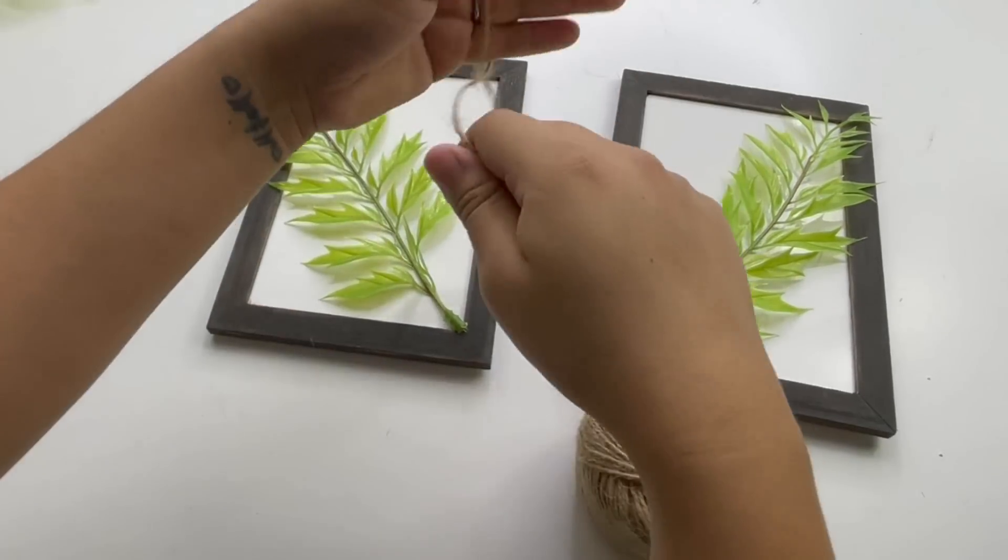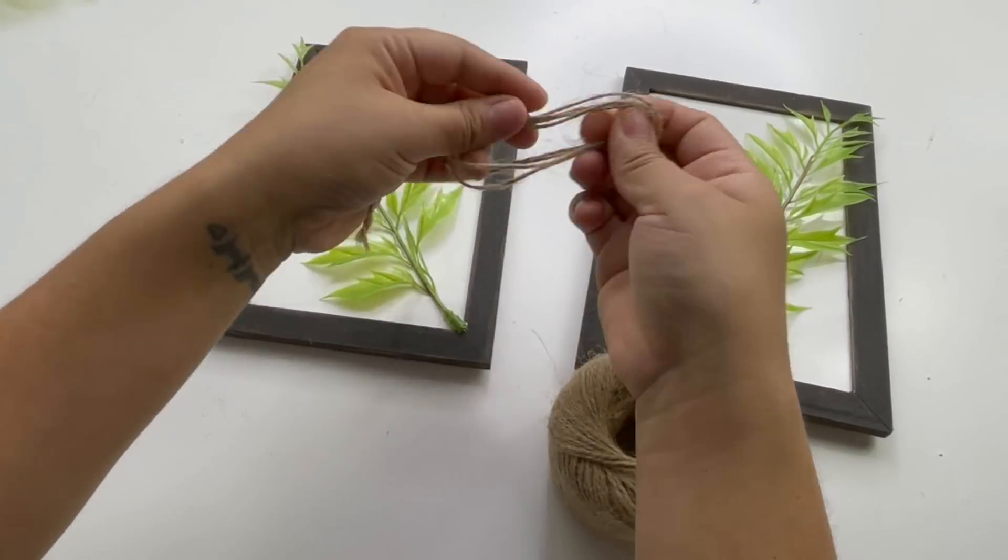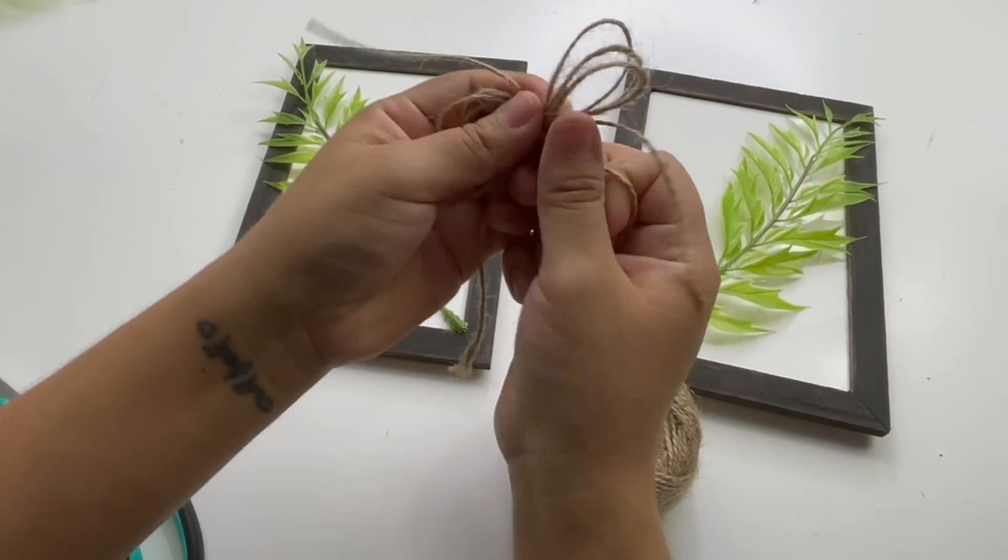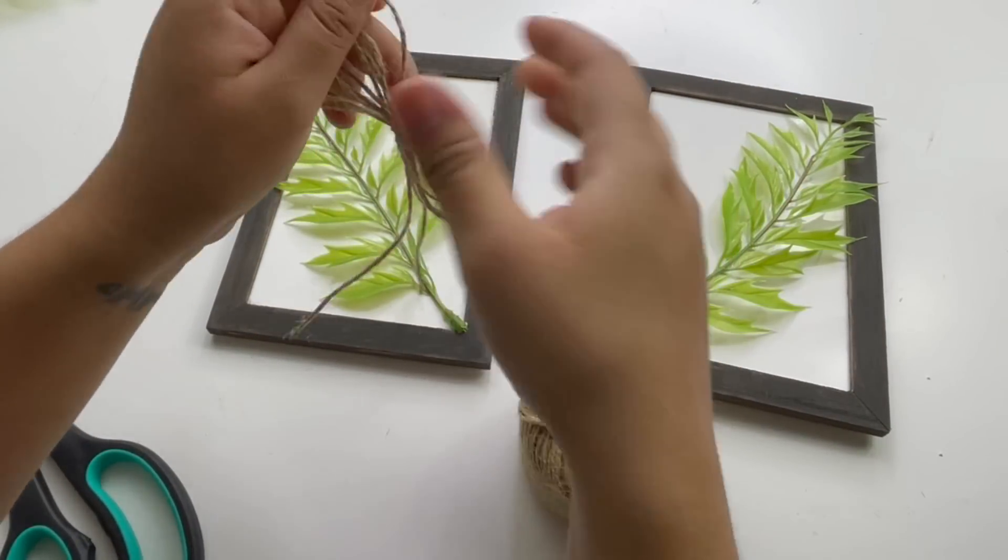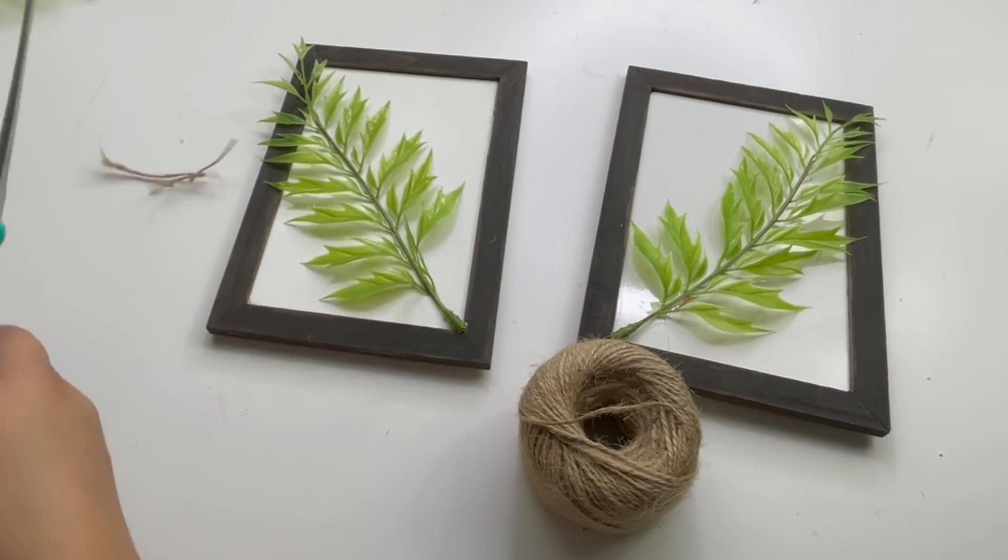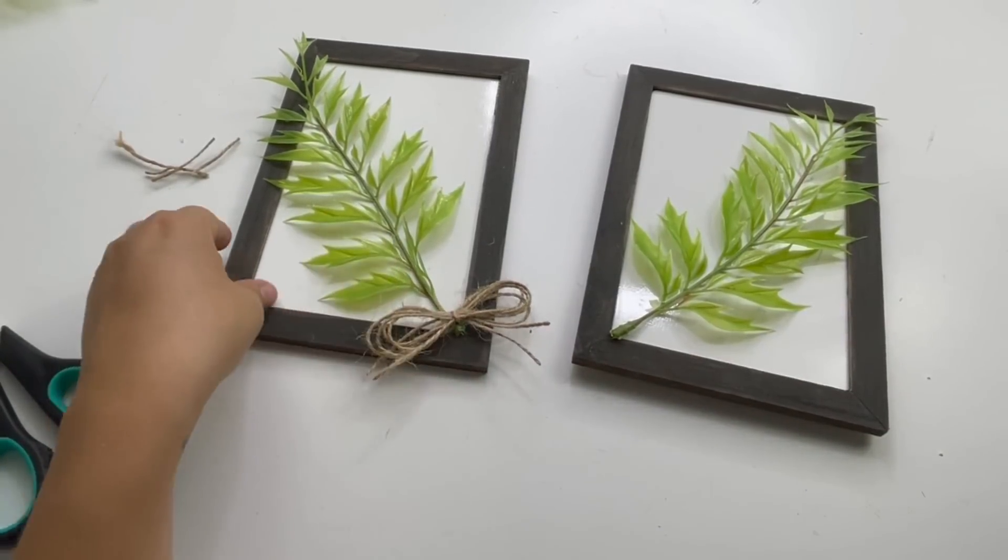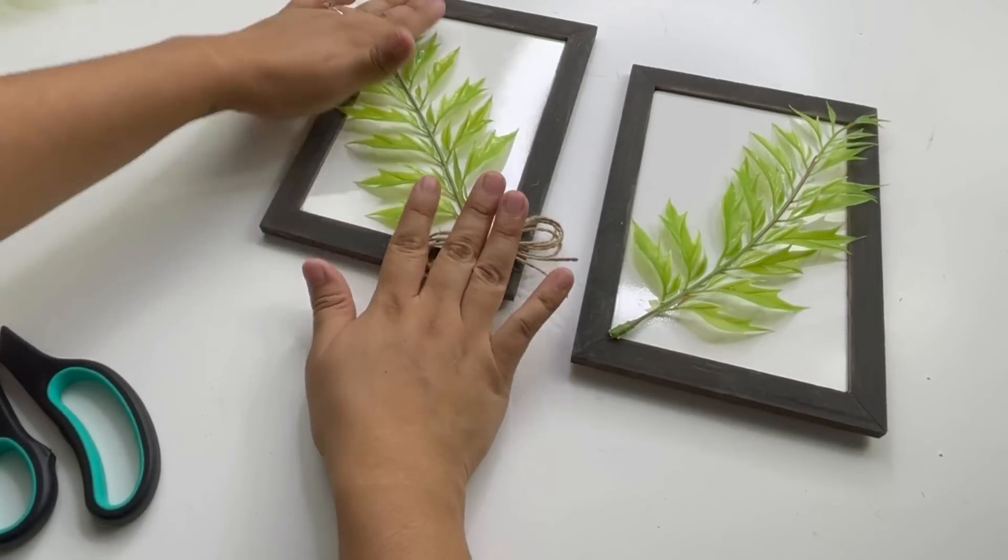Now to cover the little stem at the bottom, I will be making some jute twine bows and adding them at the bottom. And that is it. This was very easy and simple to do.